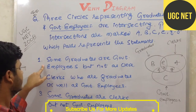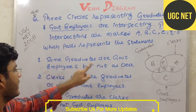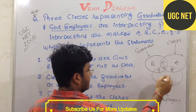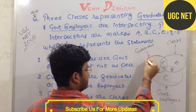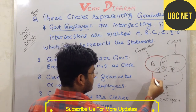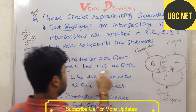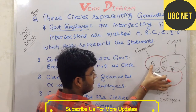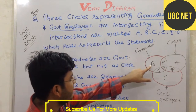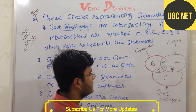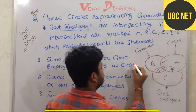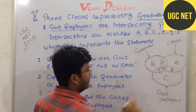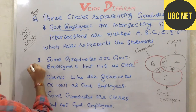Question number 1 says: some graduates are government employees but not clerks. Looking at the diagram, we need the area where graduates and government employees intersect, but excluding the clerks region. That area is F. So F is the correct answer for question number 1, because F denotes graduates with government employees but not clerks.